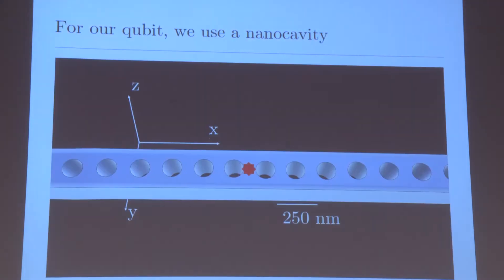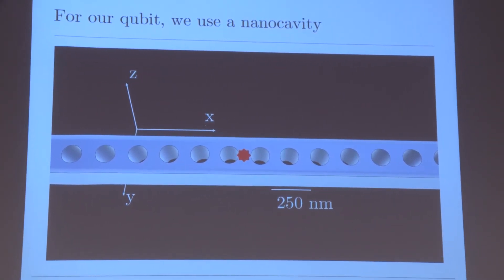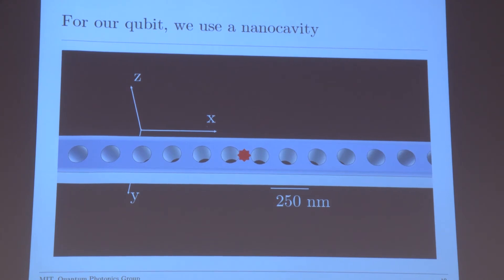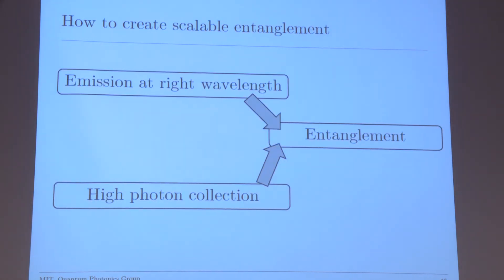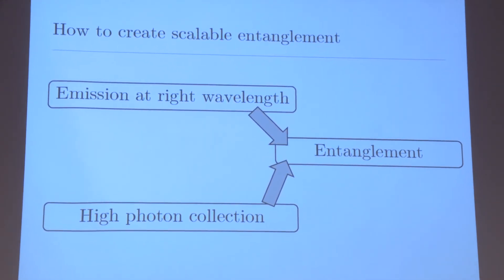In reality, the cavity looks a bit different. So we have this nanobeam carved into the diamond, and the qubit sits right there in the middle of the beam. The beam is a nanobeam, which means that it's at nanometer scale, and it has these holes on both sides of the qubit. And the holes is really what acts as a mirror for our emission, and lets the light bounce back and forth, and forces emission into the right wavelength. So in this way, we can fix the first issue that we were talking about before.